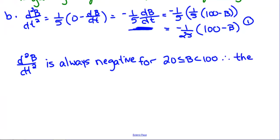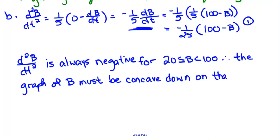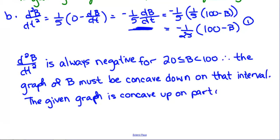So therefore, well, I would rather explain this. I would rather say, d squared B over dt squared is always negative for 20 is less than or equal to B, which is less than 100. Therefore, the graph of B must always be concave down, or not always, but must be concave down on that interval. And it's not. Okay. It's not. We need, probably should mention the given graph is concave up on part of the interval.